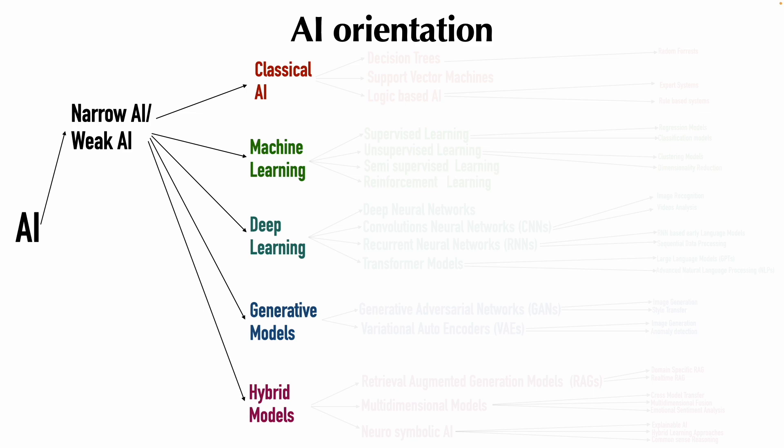Under narrow AI, there is classical AI, machine learning, deep learning, generative models, and hybrid models.